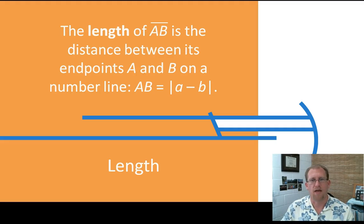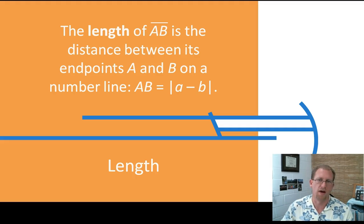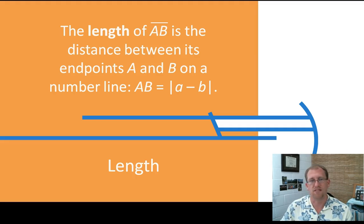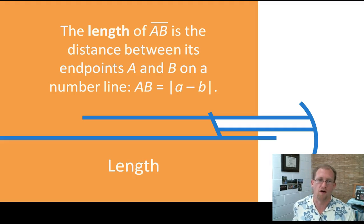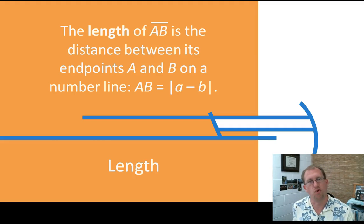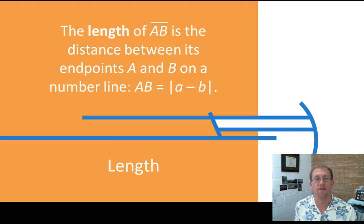So once we have number lines and we have numbers on a line, we can measure the distance between these points on a number line. If you want to know how far it is from 7 to 12, you just subtract — 12 minus 7, you get 5. There are 5 units between some place named 7 and some place named 12 on a number line. Length is how far between two points. If you want to measure a segment, you get the coordinates of the two endpoints and subtract them to find the length.